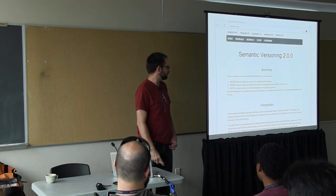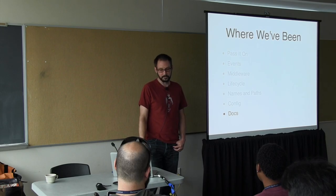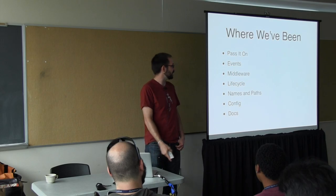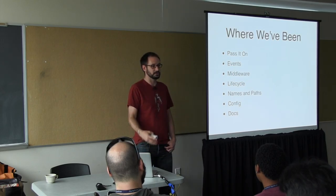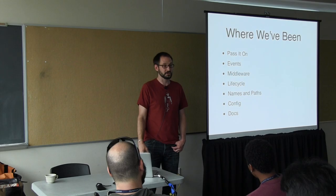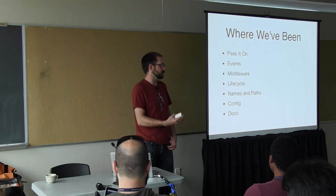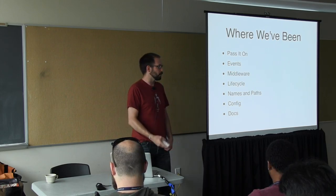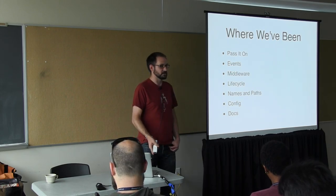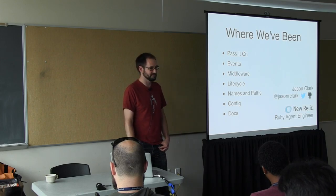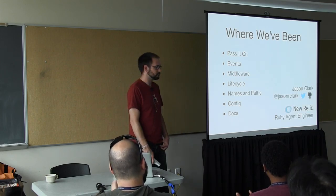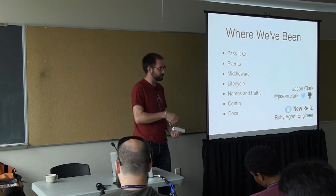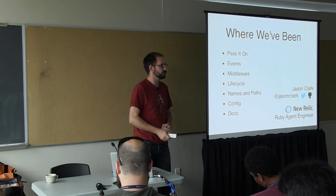It's a lot clearer if a feature is in version 2.0 because it was a major addition than just knowing 0.47 happens to have the feature you need. So that's documentation. We've talked about passing objects in, using evented patterns and middlewares, running a whole application and the lifecycle pitfalls, how you can name things better and avoid module collisions, and how to configure and document your stuff. Thank you.